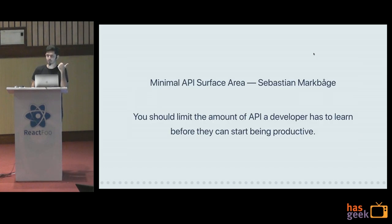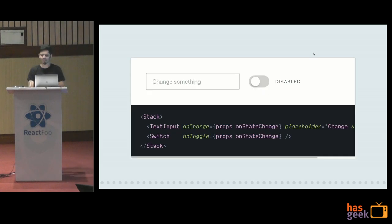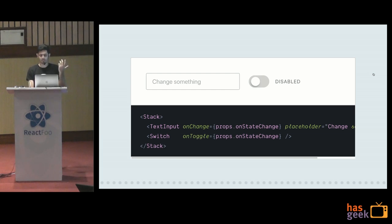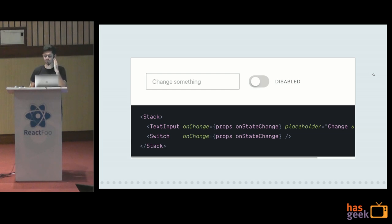So basically we change `onToggle` to `onChange` — consistency, awesome. We just change on toggle to on change and get consistency across components.